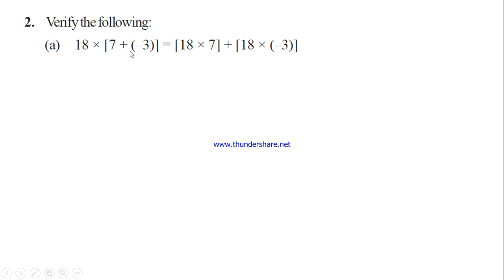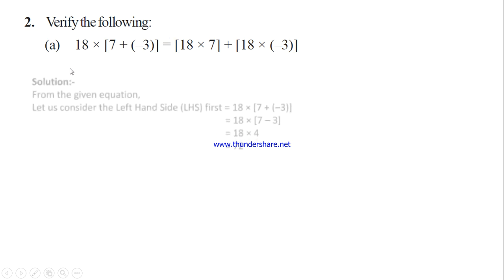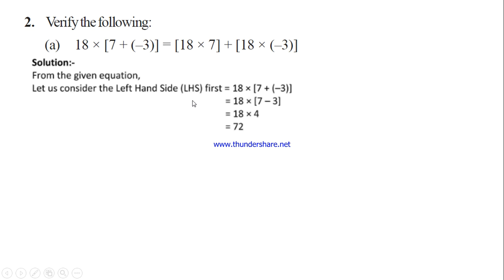Here 18 into [7 + (-3)] is the left hand side. So let's simplify. First we simplify the bracket value because a square bracket is given. Here the operation in the bracket is 7 plus of minus 3. Opening the bracket: 7 + (-3) = 7 - 3 = 4. Then multiplying: 18 into 4 gives us 72. So the left hand side value is 72.